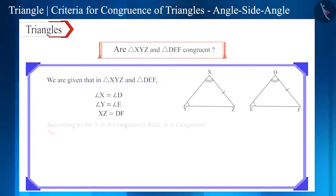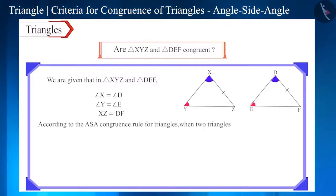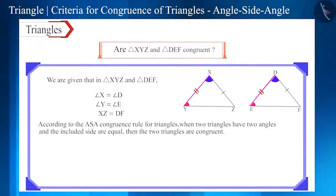No. Even though there are two angles and one side is equal, according to the ASA congruence rule for triangles, when two triangles have two angles and the included side, i.e., the side between those two angles are equal, then these two triangles are congruent.